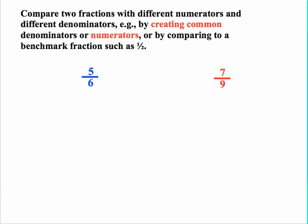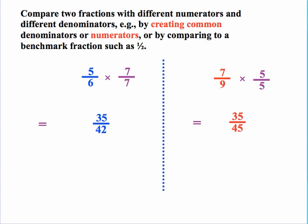Let's do an example where we create common numerators, comparing five over six to seven over nine. The critical idea is the multiplicative identity — students must understand we're multiplying by one, so we're not changing the value of either fraction. The easiest way to get a common numerator is to multiply the two numerators: five times seven equals thirty-five. So thirty-five will be our common numerator. To change 5 sixths, we multiply by seven over seven; to change 7 ninths, we multiply by five over five. We then compute, getting thirty-five over forty-two and thirty-five over forty-five.